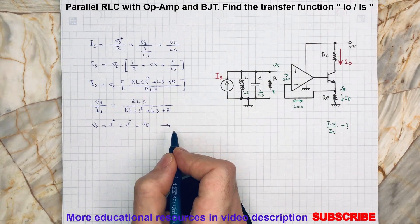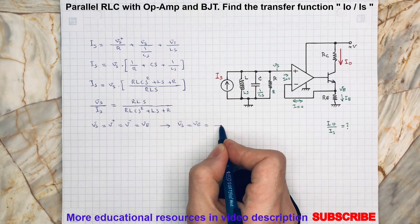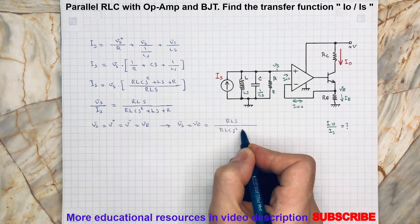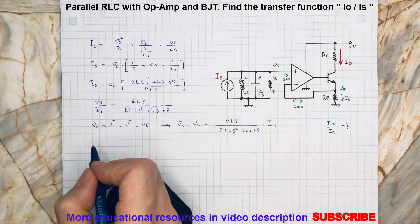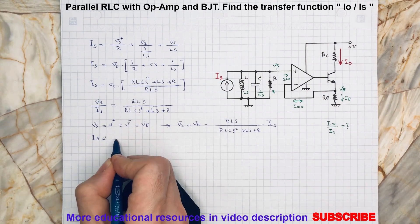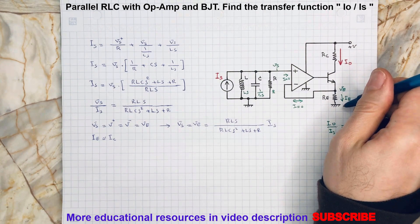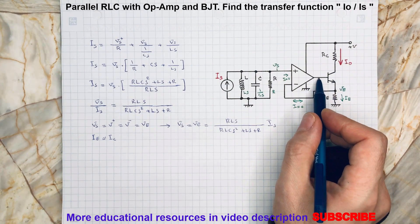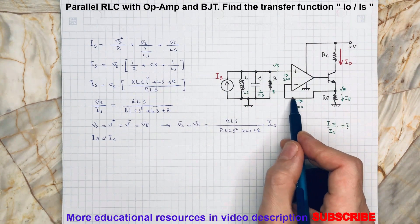Therefore, now we can also say IE is almost equal to IC. The current passing through RE is similar to current passing through collector because we can neglect IB passing through the base of this BJT transistor. And as we know, there is no current going to the op-amp terminal.